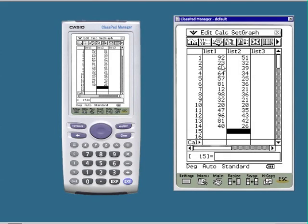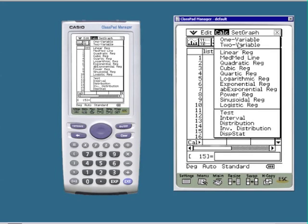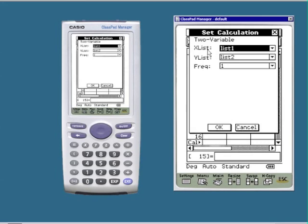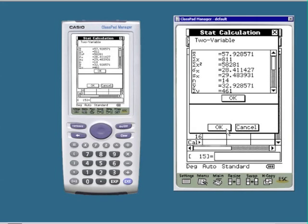So you can see I have my x values in list 1 and my y values in list 2, and the ordered pairs are still in the correct order. Now I go to Calc, 2 variable. My x values are in list 1, my y values are in list 2. OK.